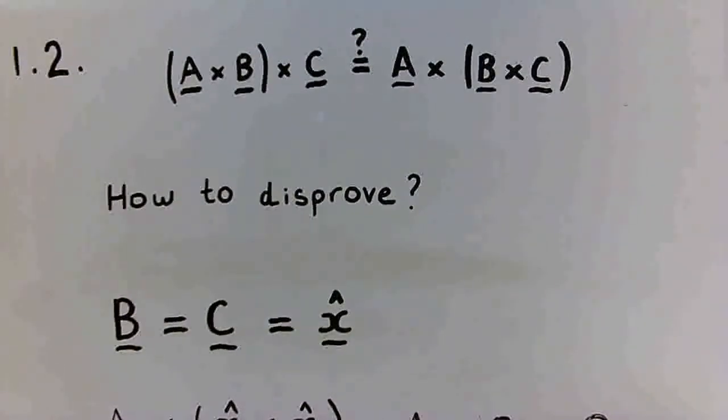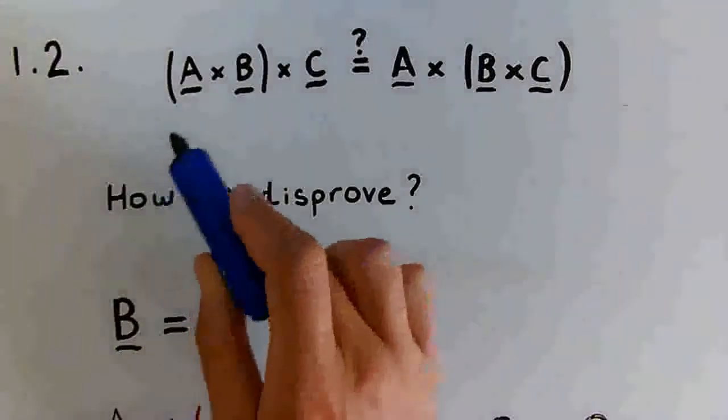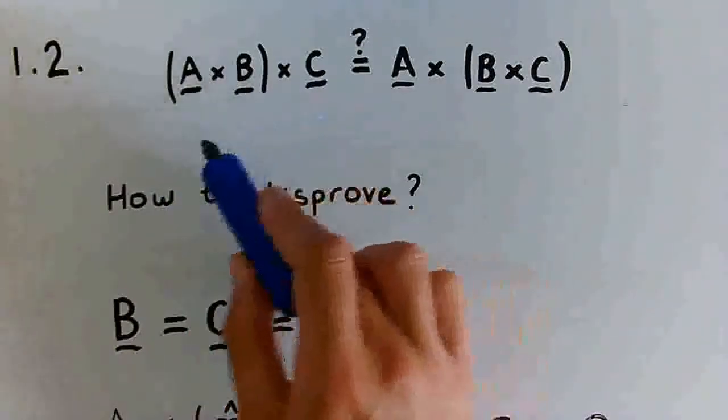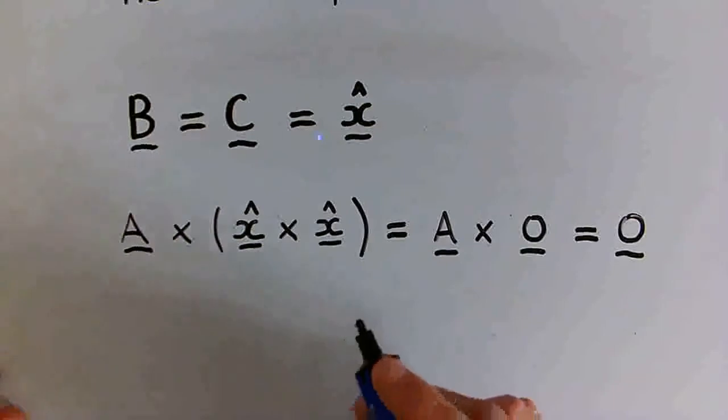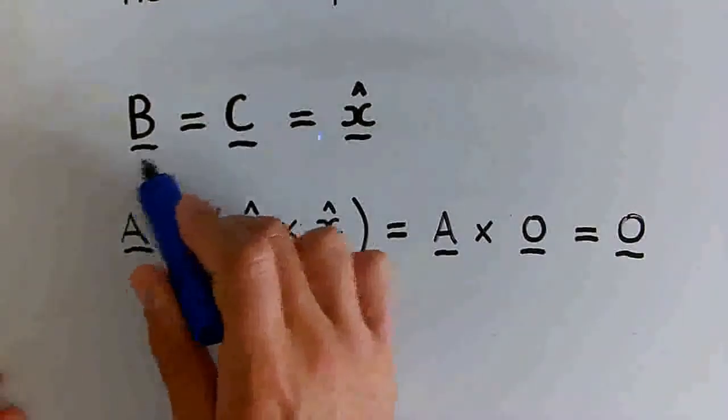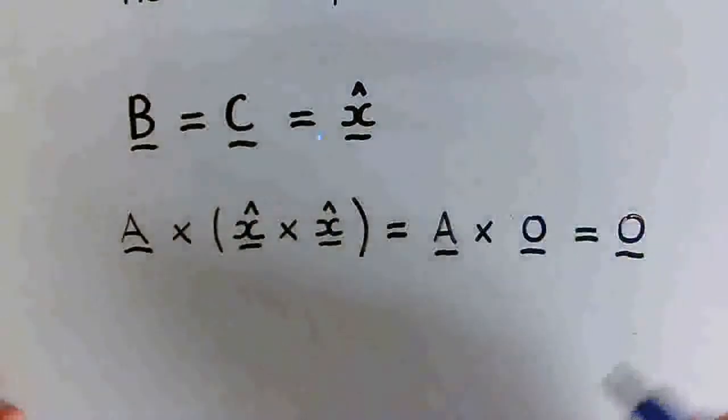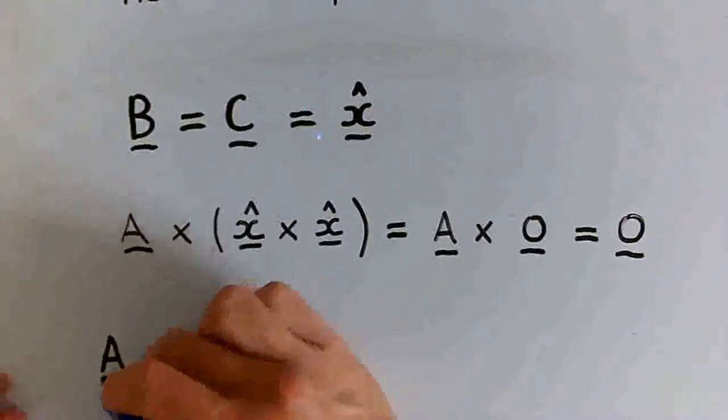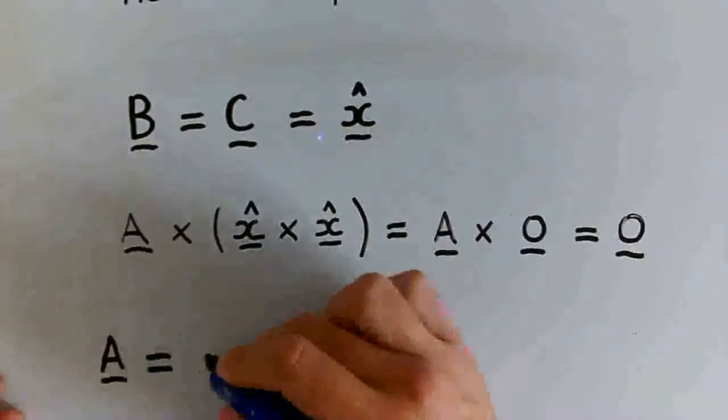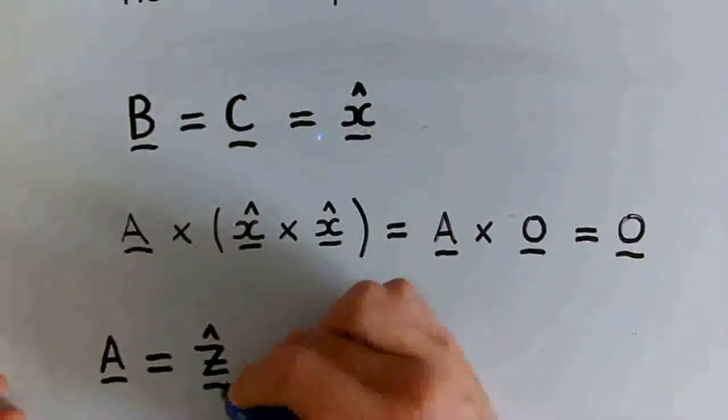So now finally, to disprove that the cross product is associative, we need to choose the vector A such that this left-hand side is not equal to the zero vector. So keeping the vectors B and C as the unit vector in the positive x direction, let's choose the vector A as equal to the unit vector in the positive z direction.